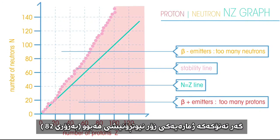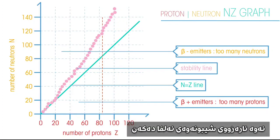If particles have a high number of protons, usually more than 82, they are likely to undergo alpha decay.